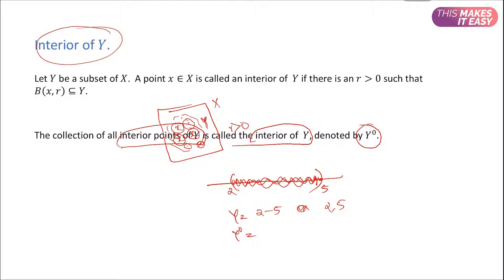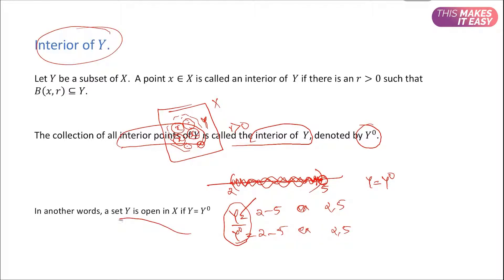If we take a ball around 5, it is not included in Y, so 5 is not an interior point of Y. Similarly, 2 is also not an interior point of Y. So the interior of Y is all points between 2 and 5 excluding 2 and 5. Therefore, a set Y is open if Y is equal to Y⁰ — that is, a set Y is open if it equals its own interior.